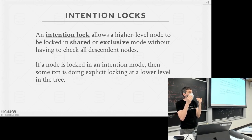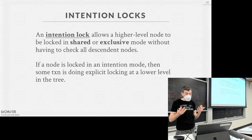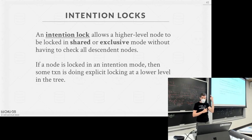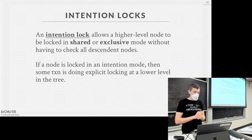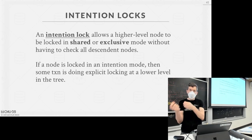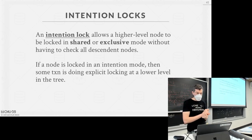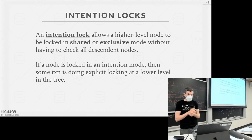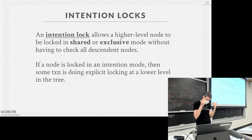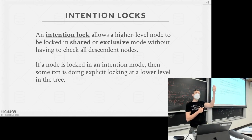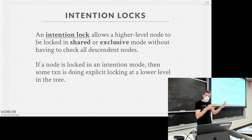To answer the question: if everyone has to acquire locks on the way down, but I only want a shared lock on a single tuple and not the entire table, how do I actually do this? This is what intention locks help us do. Intention locks are basically hints at the higher-level parts of the hierarchy that tell other transactions what's happening below — our intention is to acquire an exclusive or shared lock at some lower point in the tree.